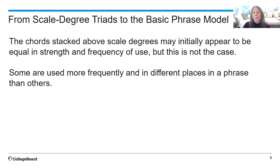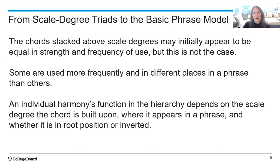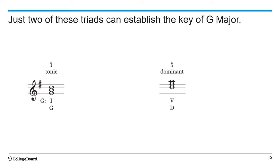An individual harmony's function in the hierarchy depends on the scale degree the chord is built on, where it appears in a phrase, and whether it's in root position or inverted. Just two of these triads, by themselves, can establish the key of G major. Those are tonic and dominant. We refer to this sometimes as the tonic-dominant axis, and it's a basic concept of tonal music. The dominant harmony resolving to the tonic chord makes the sense of G major.